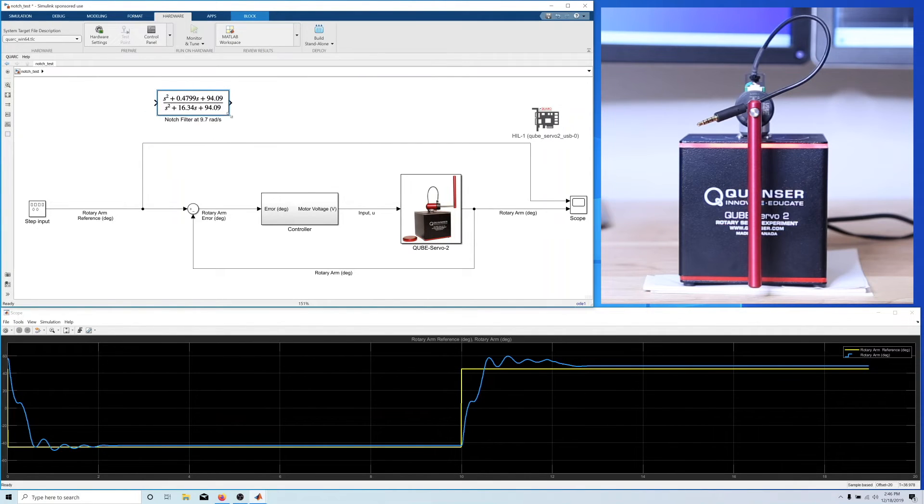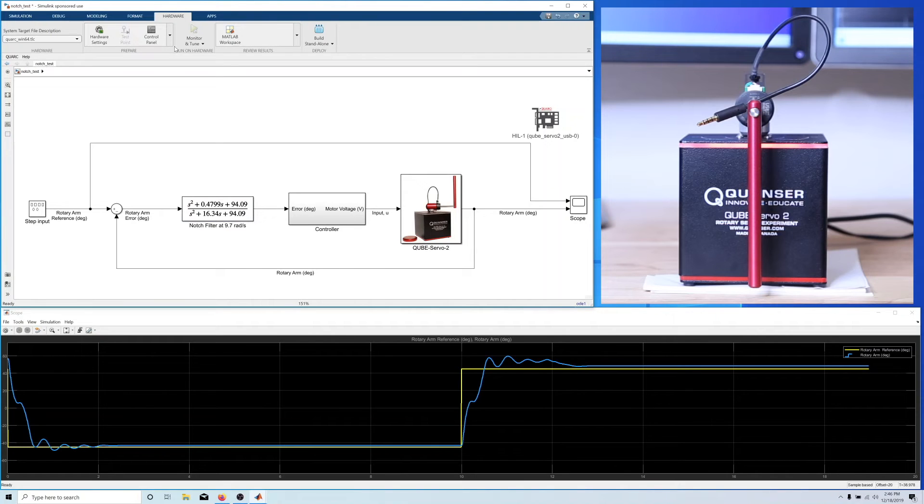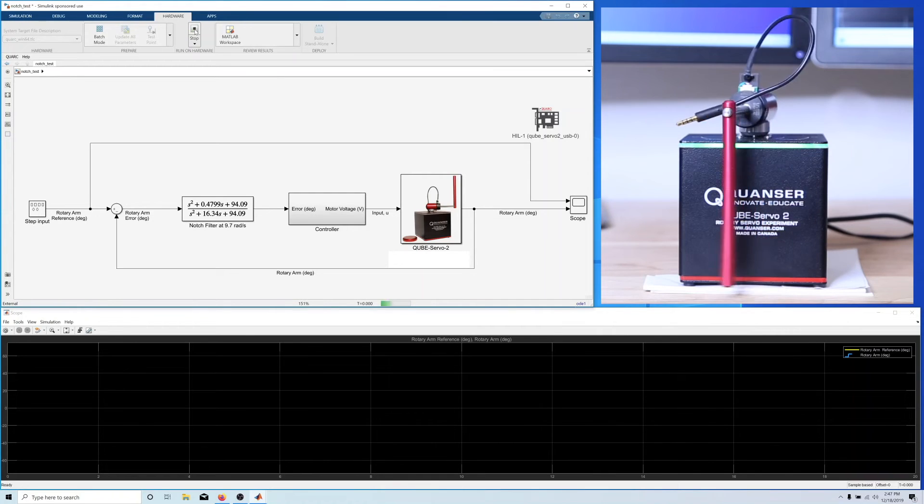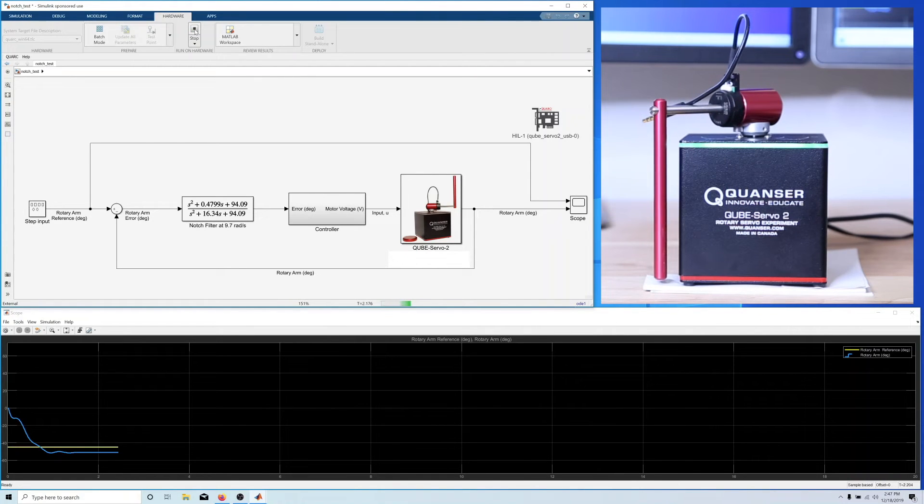Now the reason the pendulum is oscillating is not because of some external force acting on it, but because our controller itself is driving the rotary arm at a frequency that is exciting the pendulum, or adding energy into that mode. And one way we may try to combat this is to add a notch filter in series with the controller. Basically by doing this, we're not letting the controller change the voltage at the natural frequency of the pendulum, which in our case is about 9.7 radians per second. So, if we don't command the arm at this frequency, then we shouldn't add any energy into the pendulum. Let's check this out.